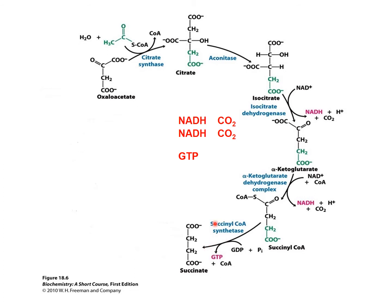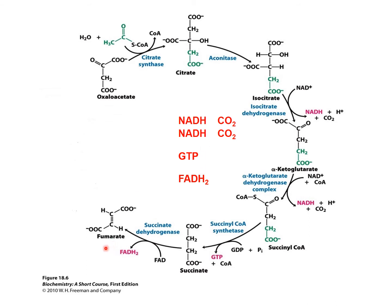Succinate is then converted into fumarate by another oxidation reaction, which produces 1 FADH2. The energy released from this reaction is not high enough to form NADH, but is just sufficient to form FADH2. This step is catalyzed by the enzyme succinate dehydrogenase.